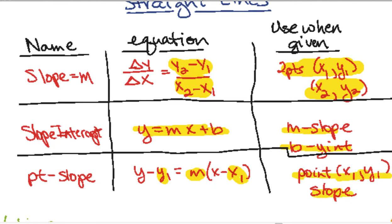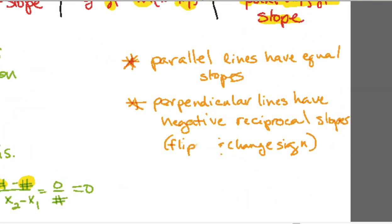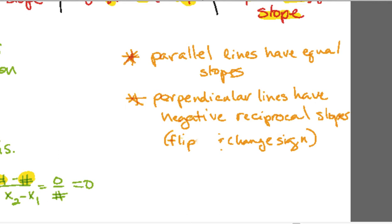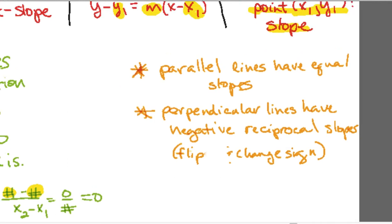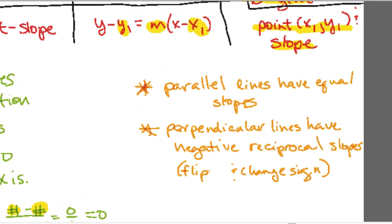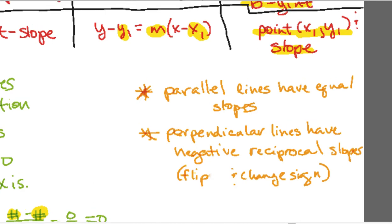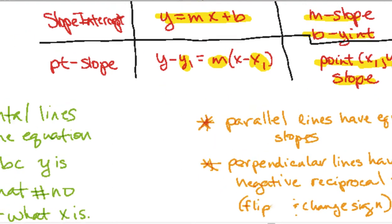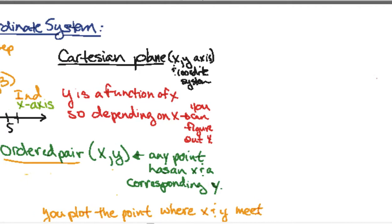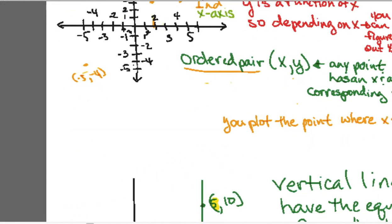Those are the basic equations of a line. Just remember a quick little side note: parallel lines have the same slope, perpendicular lines have negative reciprocal slopes. So you flip the sign, flip the fraction, and change the sign. This is the foundation for a lot of the graphing stuff that you're going to get started on, and then we'll get into more complex functions later.